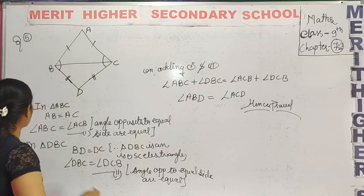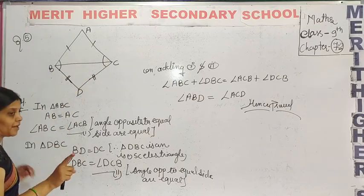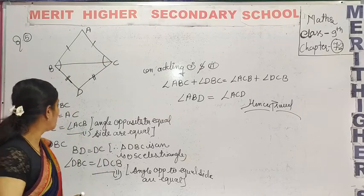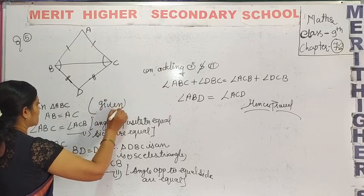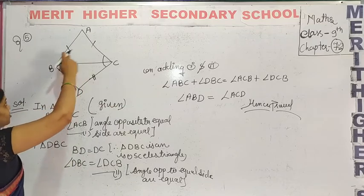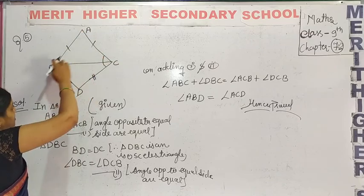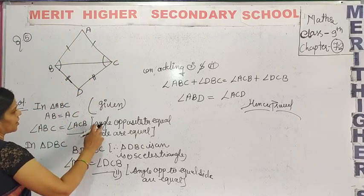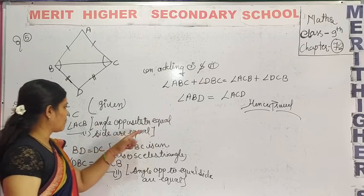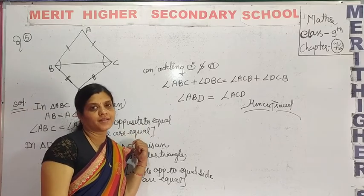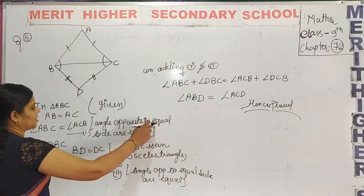So, how is triangle ABC? In triangle ABC, AB and AC are given as equal — already given that AB and AC are equal. Since angle opposite to equal sides are equal, if AB equals AC, then the angles opposite to them are equal.